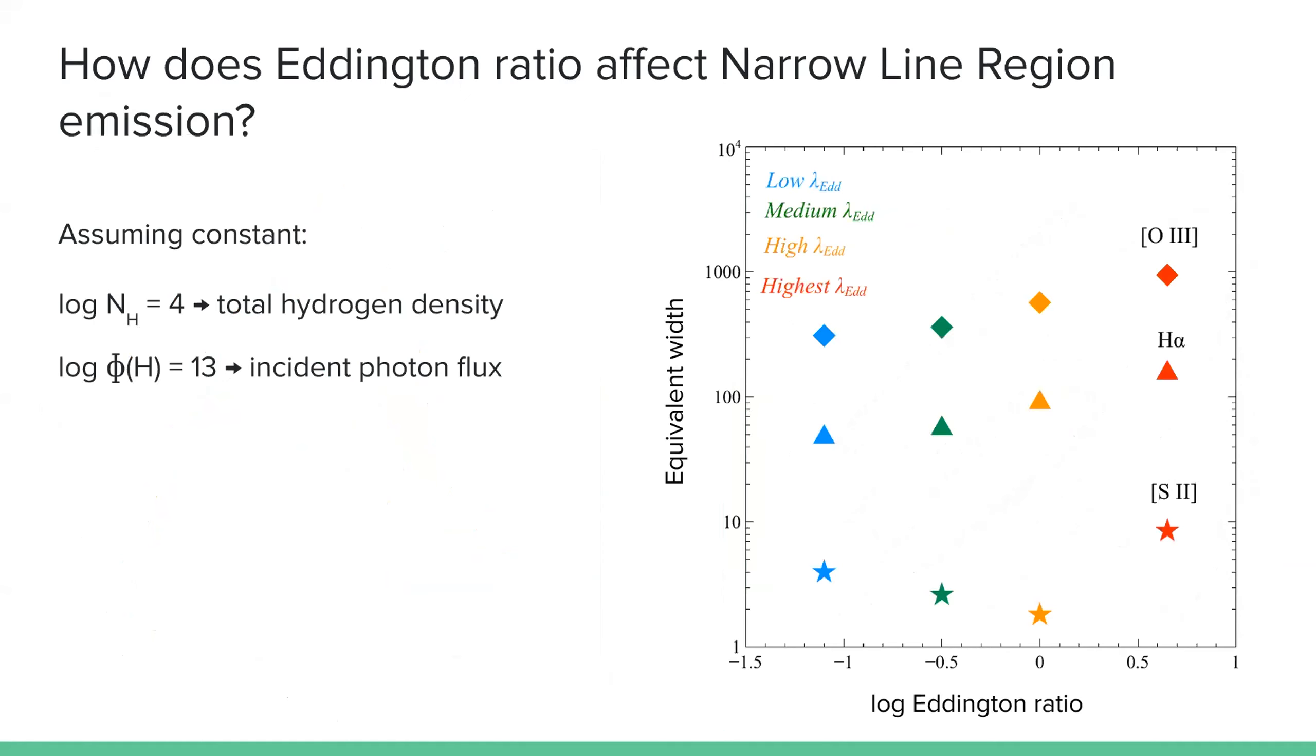So how does the accretion rate, which is equivalent to the Eddington ratio, affect the narrow line region emission? So if we take a case assuming the constant of total hydrogen density of log N_H = 4 and the log of incident photon flux of 13, we will have the figure in the right panel here.